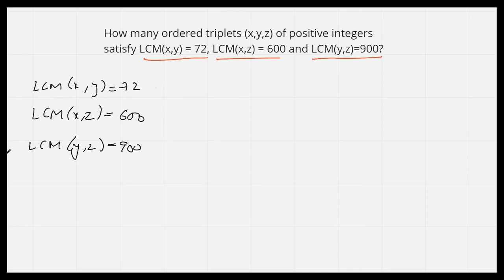All of these numbers, let us first write them in the prime factorization form. 72 would be 8×9, which is 2³×3². 600 would be 2³×3×5². And 900 would be 2²×3²×5².